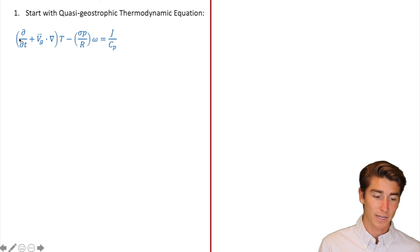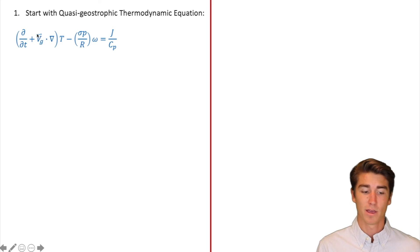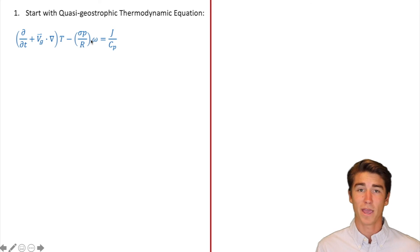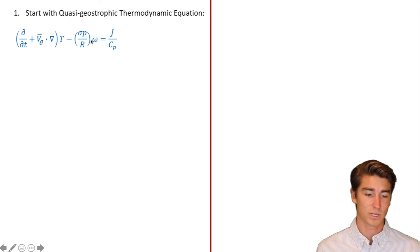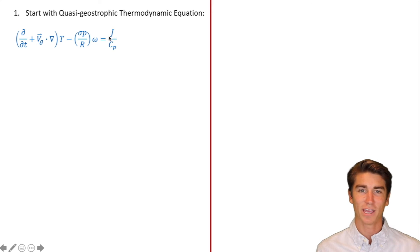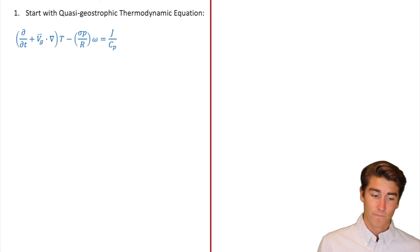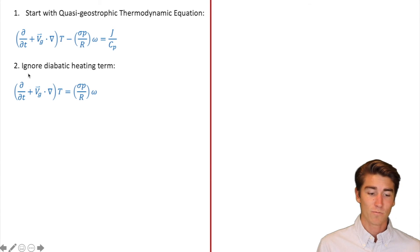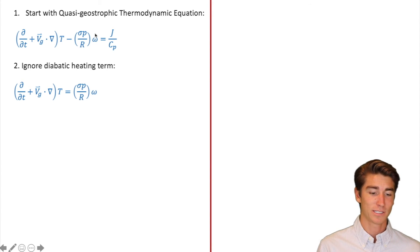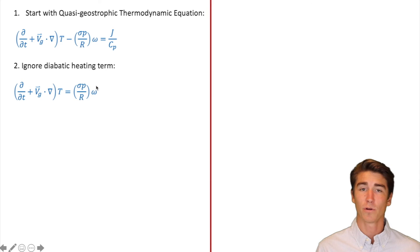Here you see that is change with respect to time. This is going to be advection, temperature, some constants, omega which represents vertical motion, and whenever you see a J you know that's the diabatic term. First thing we're going to do, ignore that diabatic term — that's going to get crossed out. This right here is going to come over to the right side.